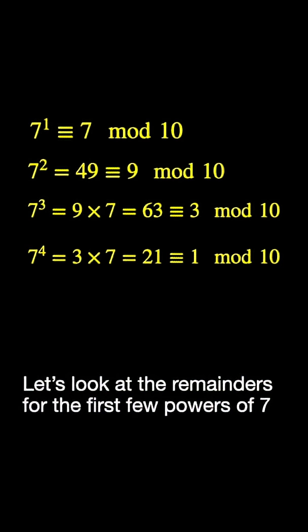And then 7 to the 4th is 3 times 7, which is 21, which leaves a remainder of 1. And then finally, 7 to the 5th takes us back to 7. So it keeps cycling through multiples of 4, with 7 to the 4th congruent to 1. And 7 raised to a power that's any multiple of 4 will give us 1.